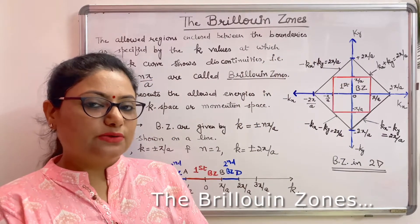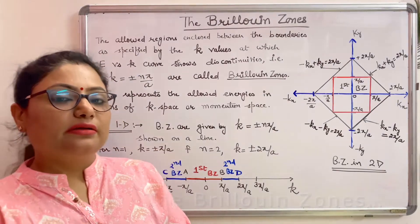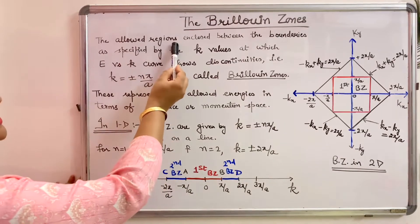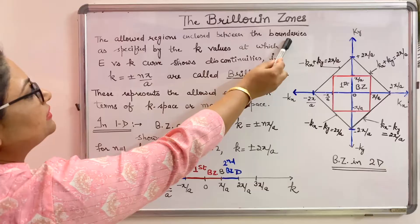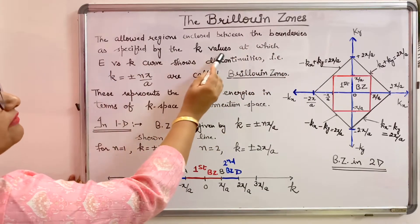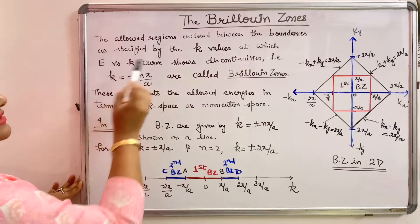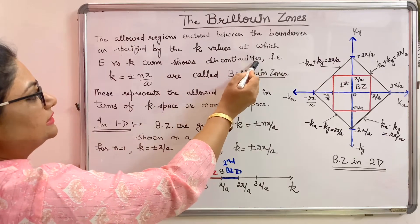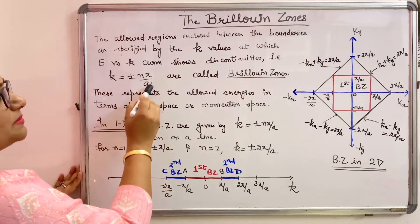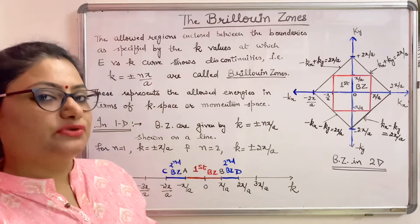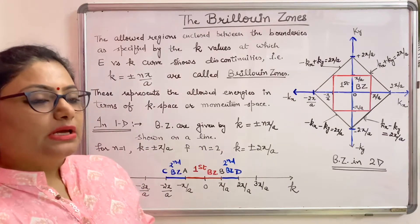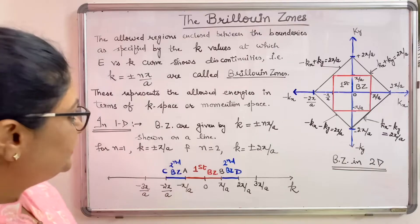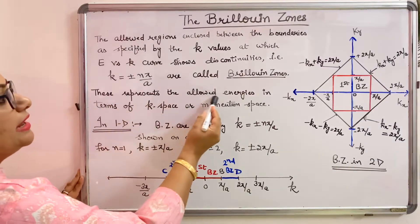Hello everyone, in this video we will discuss about the Brillouin zone. Brillouin zones are basically the allowed regions, enclosed between the boundaries as specified by the k values at which the energy versus k curve shows discontinuity — that is, at k equal to plus or minus n pi by a. The allowed regions enclosed between those boundaries are called Brillouin zones.